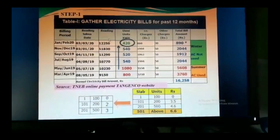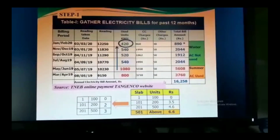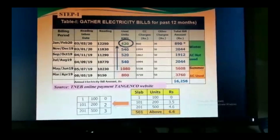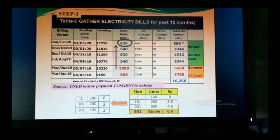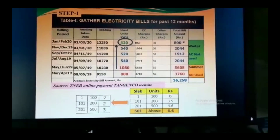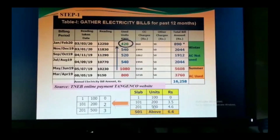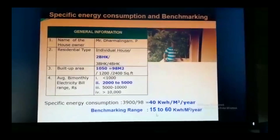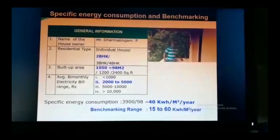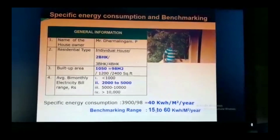For step one, you can collect electricity bills from the TNEB website. This data is for a two-BHK, 1,000 square feet house. During summer they spent 5,600 rupees, dropping below 1,000 rupees in winter — January and February show the lowest consumption, as the household moved from the above-500-unit slab rate to below 500 units. Working out the specific energy consumption gives 40 kWh per square meter per year, but the benchmark is as low as 15, so there is a vast gap and the objective is to reduce it by at least 20–25%.